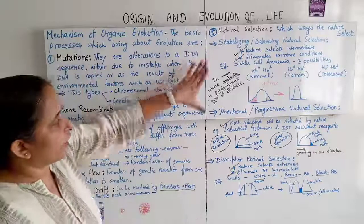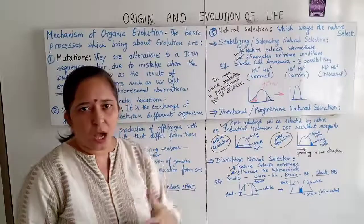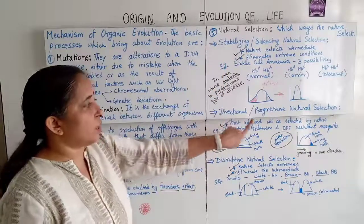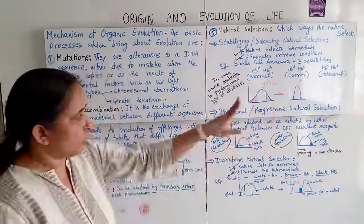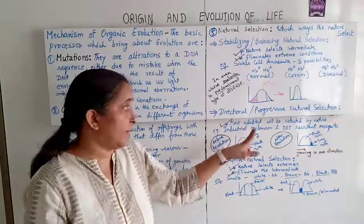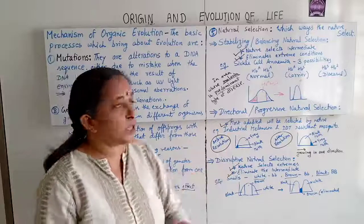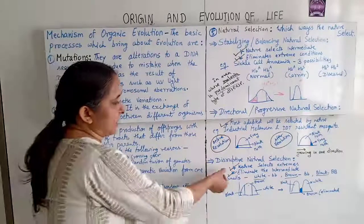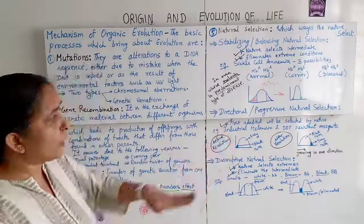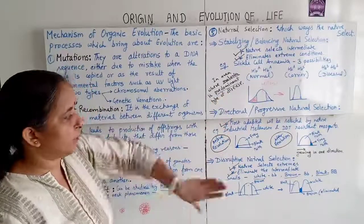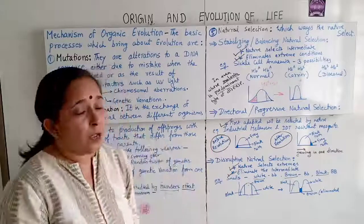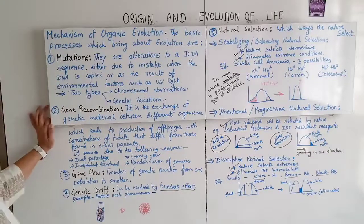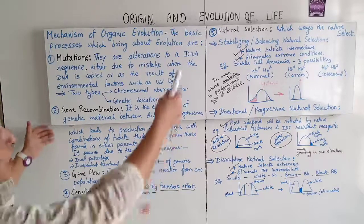To summarize natural selection: in stabilizing/balancing selection, nature selects the intermediate and eliminates extremes (example: sickle cell anemia). In directional/progressive selection, the most adapted is selected (example: industrial melanism, grey and black moths). In disruptive selection, nature selects the extremes and eliminates the intermediate (example: white, brown, and black snails).